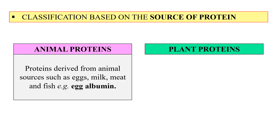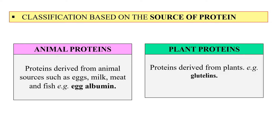When we take proteins from plant sources, these are called plant proteins. Plant proteins are generally of lower quality because they have a low or very limited amount of essential amino acids. So animal proteins are high quality proteins containing adequate amounts of essential amino acids, while plant proteins are low quality proteins containing very limited amounts of one or more essential amino acids.